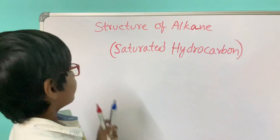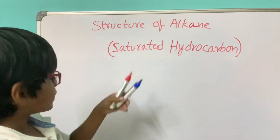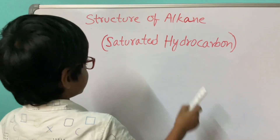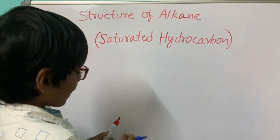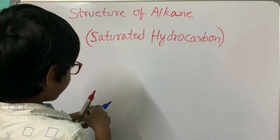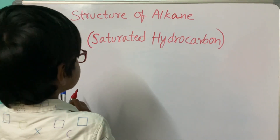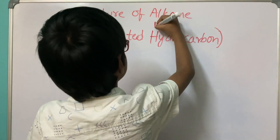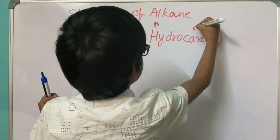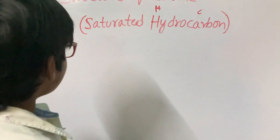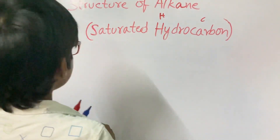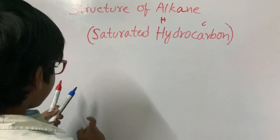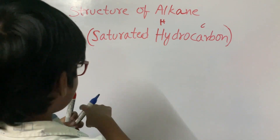Hi everyone, we are going to draw the structure of Alkane. Alkane is a saturated hydrocarbon. Hydrocarbon contains hydrogen and carbon. Saturated hydrocarbon contains single covalent bond between carbon atoms.